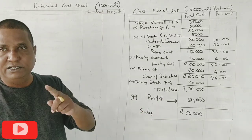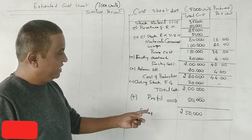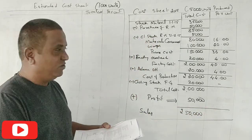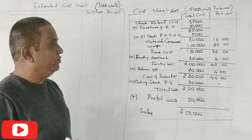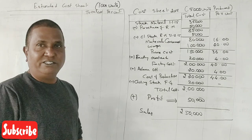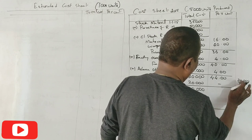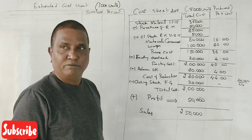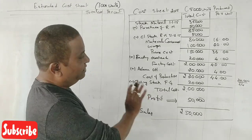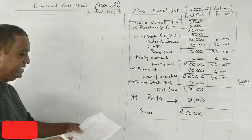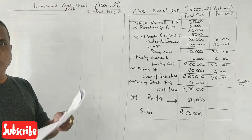Now, what is the total cost per unit and selling price per unit? We don't know directly — but it is very clear from the totals. ₹2,20,000 was the cost of production for 5,000 units. The closing stock of finished goods is ₹20,000, calculated on the basis of ₹44 per unit cost of production. Now the question is: if in 2016 we start manufacturing 1,000 units, what is the total cost and what is the selling price?